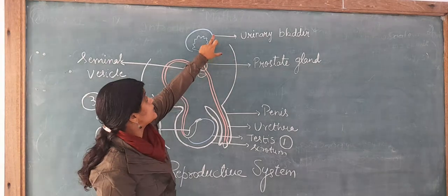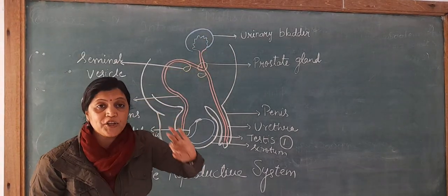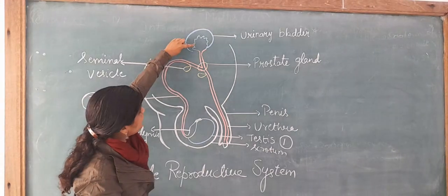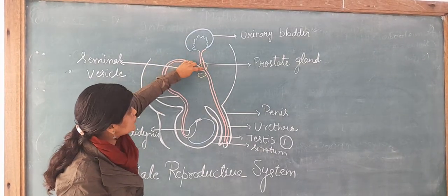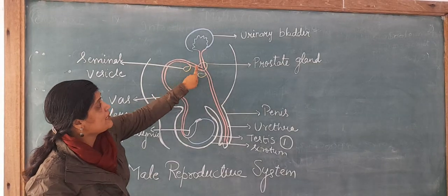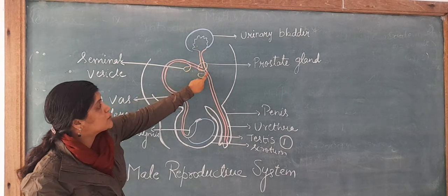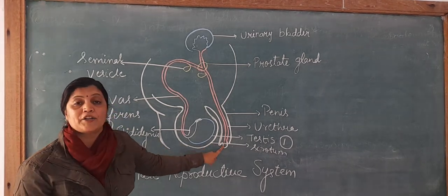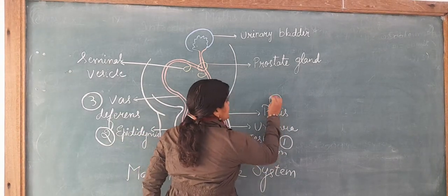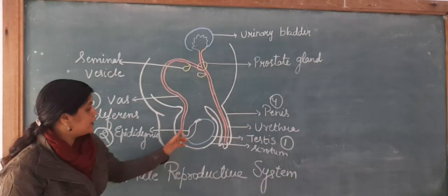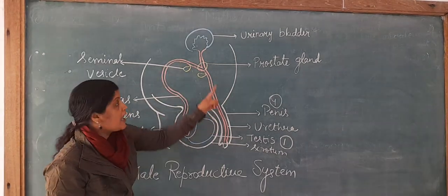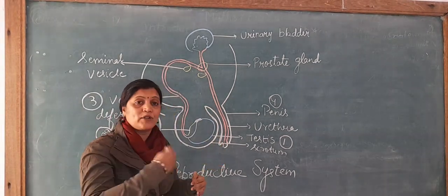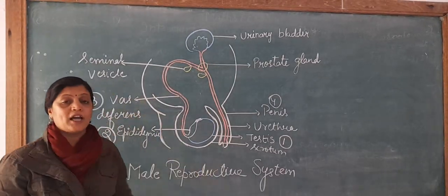From the urinary bladder — which we have learnt in our excretory system — the urinary bladder finally opens into the urethra. The vas deferens also opens into the urethra. So both the vas deferens and the urinary bladder open into the urethra, which finally opens out through the penis.